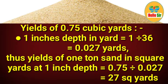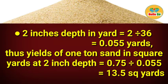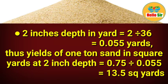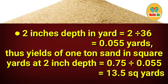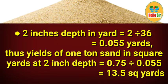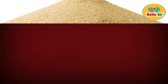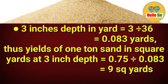For a 2-inch depth in yards: 2 divided by 36 equals 0.055 yards. Thus, the yield of one ton of sand in square yards at 2-inch depth is 0.75 divided by 0.055, which comes out to 13.5 square yards.